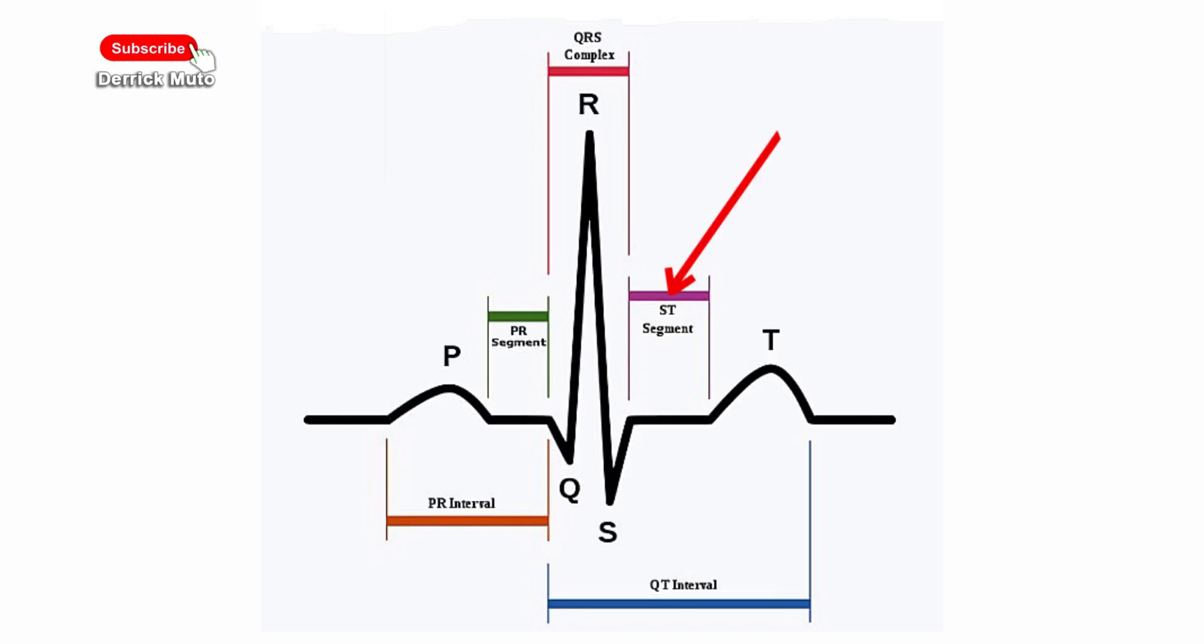The ST segment is an interval between ventricular depolarization or contraction and ventricular repolarization or relaxation. It is identified as the end of the QRS complex to the beginning of the T wave. This segment reflects the period of zero potential between ventricular depolarization and repolarization. It normally lasts for about 80 to 120 milliseconds. The most important cause of ST segment abnormality, that is elevation or depression, is myocardial infarction or heart attack.